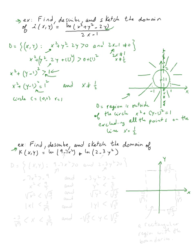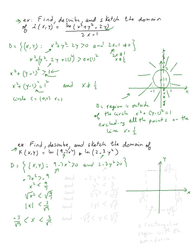Let's do the next example: find, describe, and sketch the domain of k(x, y) = ln(9 - 7x²) + ln(2 - 3y²). The domain is all (x, y)'s where both ln inputs are strictly positive. For the first condition, -7x² > -9, so x² < 9/7, giving |x| < 3/√7, which means x is between -3/√7 and 3/√7.